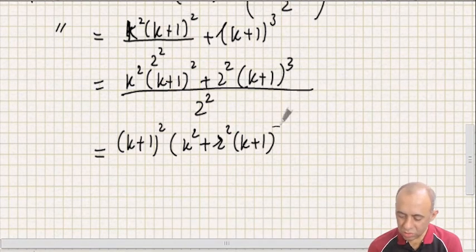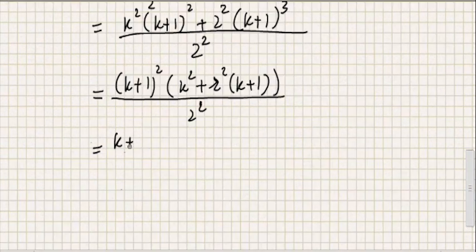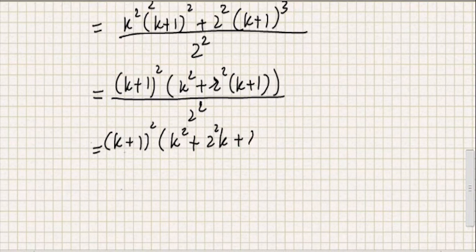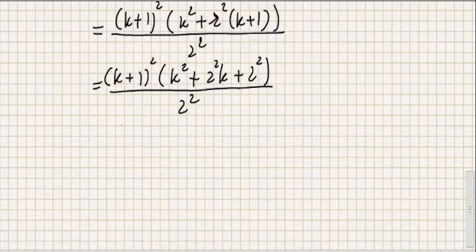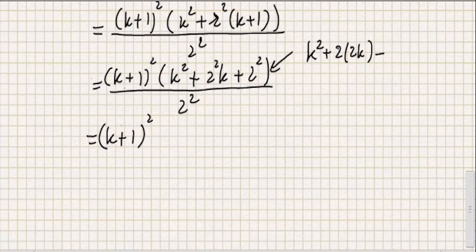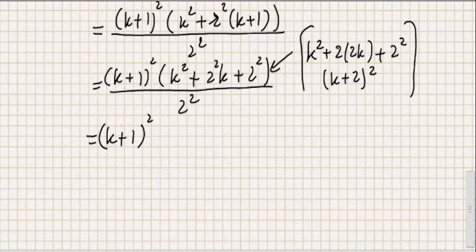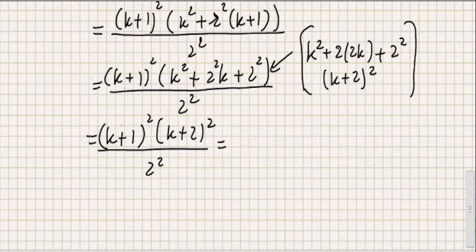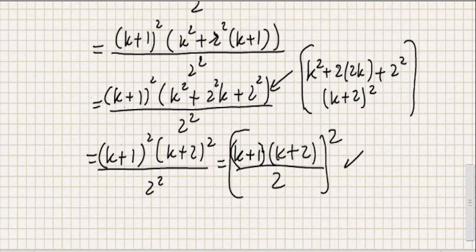So we have (k+1)²(k² + 2·2k + 2²) / 2². Notice that k² + 4k + 4 is actually (k+2)², so this becomes (k+1)²(k+2)² / 2², which can be written as [(k+1)(k+2)/2]².